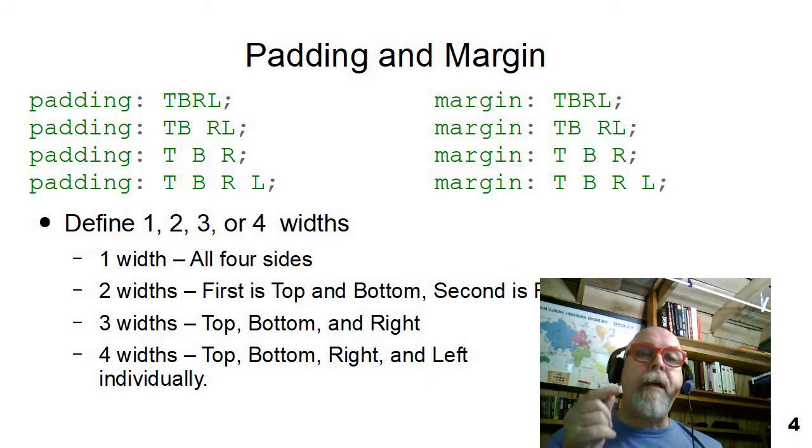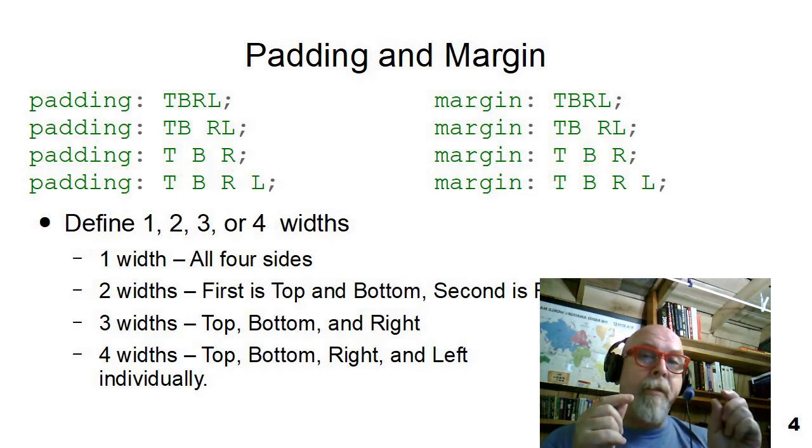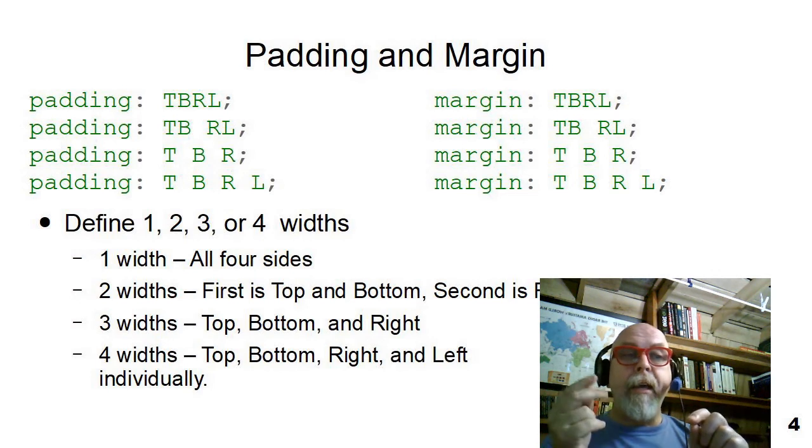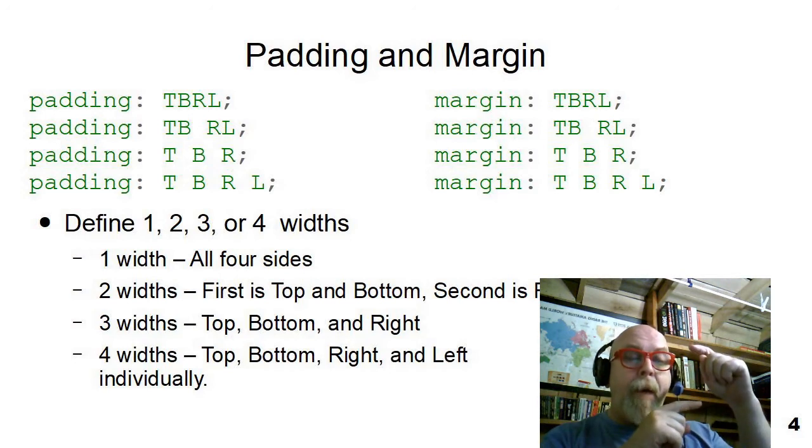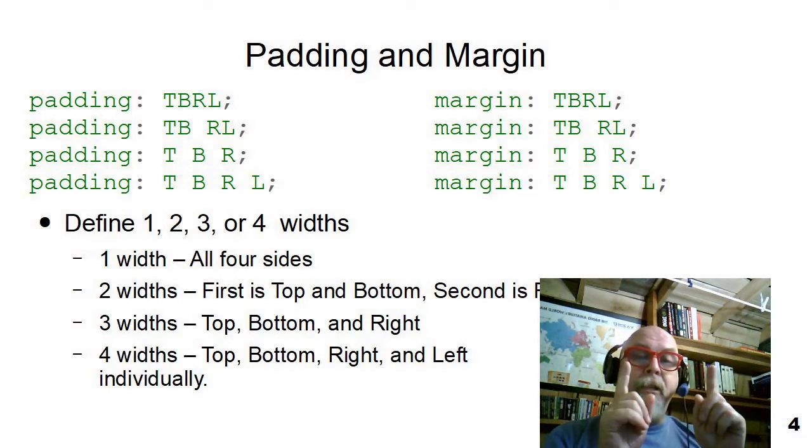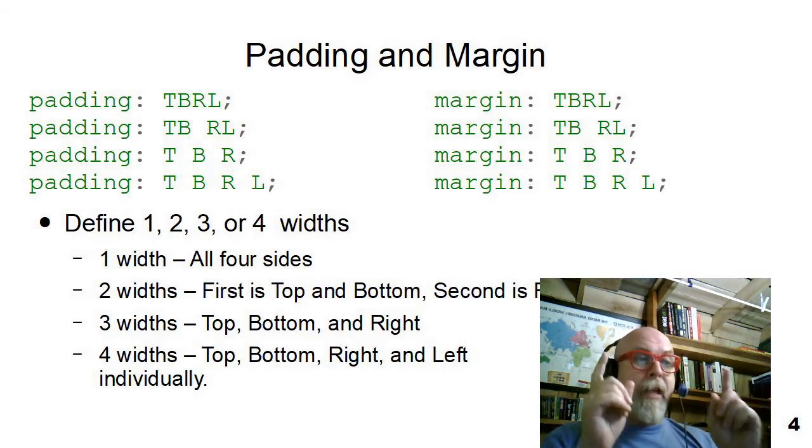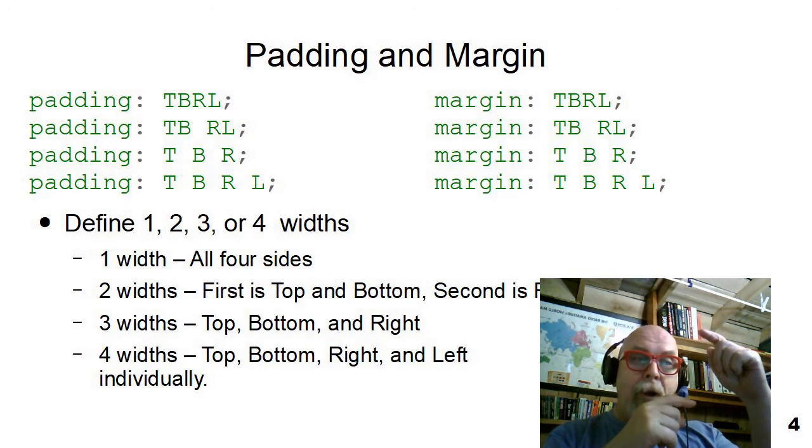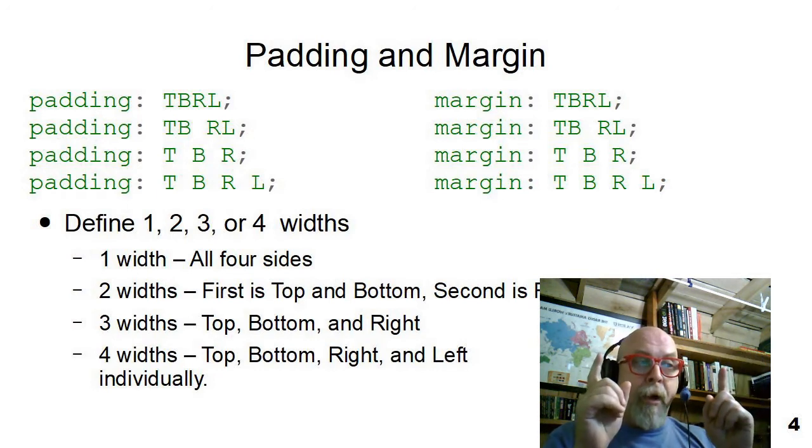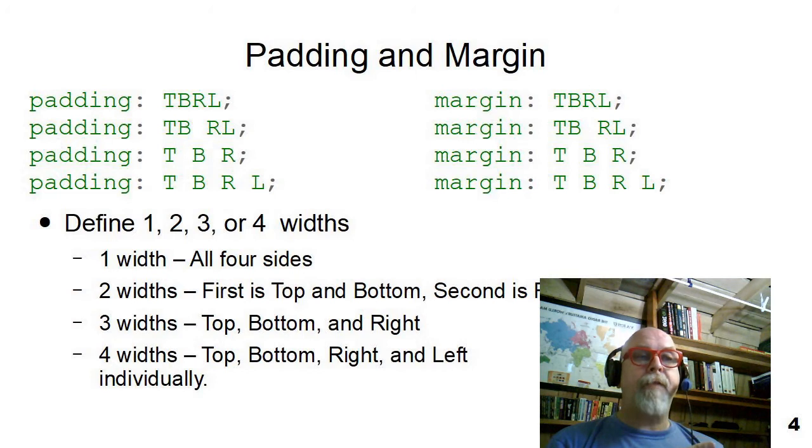If you specify padding with one dimension, that padding will be used all the way around. If you specify a padding or a margin with two dimensions, the first dimension will be used top and bottom, and the second dimension will be used right and left. So, if you give it a margin of five pixels, ten pixels, then it'll have a margin of five pixels top and bottom, and a margin of ten pixels left and right.